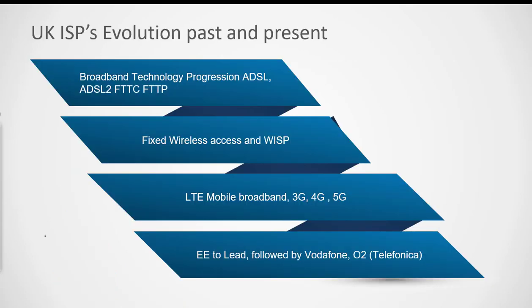UK ISP broadband technology progressed from ADSL to ADSL2, then to FTTC — Fiber to the Cabinet — and now the latest trend is FTTP, Fiber to the Premises. Other technologies that emerged include fixed wireless access, with some WISP broadband providers appearing as well. On the mobile LTE side, the evolution went from 3G to 4G and now 5G. EE was initially leading in LTE mobile broadband in the UK, followed by Vodafone and O2.